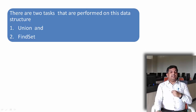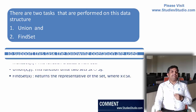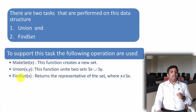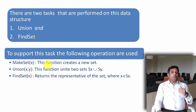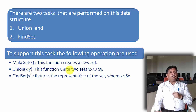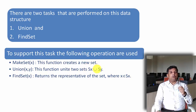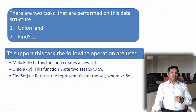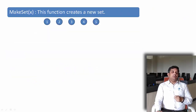There are two tasks that we perform under this type of data structure: union and find set. To support this, we have make set, union, and find set operations. Make set is a function which creates a new set. Union of x and y means it will unite two sets — if x belongs to one set and y belongs to another set, then I find the union of these two. Find set is the operation which returns the representative of the set to which x belongs. Let us see them with the help of an example.